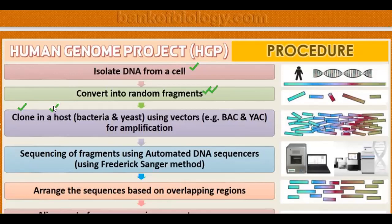After breaking into fragments, they cloned in bacteria or yeast. Bacteria have a lot of machinery needed to make a genetic material copy. Using vectors — Bacterial Artificial Chromosome and Yeast Artificial Chromosome — for amplification, meaning multiplying and copying it. The copied fragments were then sequenced using DNA sequencers. Frederick Sanger's method is one method which can be used to sequence the DNA fragments.